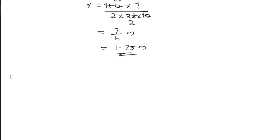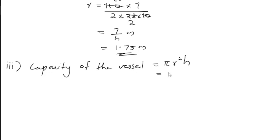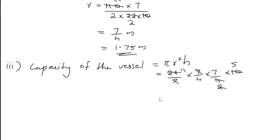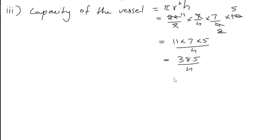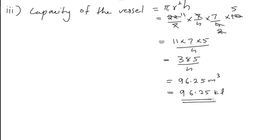Now the capacity of the vessel is π R² h. By substituting values: 22/7 into (7/4)² into 10. Cancelling the 7s and simplifying, dividing 4 and 10 by 2 gives 5/2, and cancelling 2 with 22 gives 11. Multiplying together we get 385 divided by 4, which equals 96.25 meter cube, or 96.25 kilolitres. So the capacity of the vessel is 96.25 kilolitres.